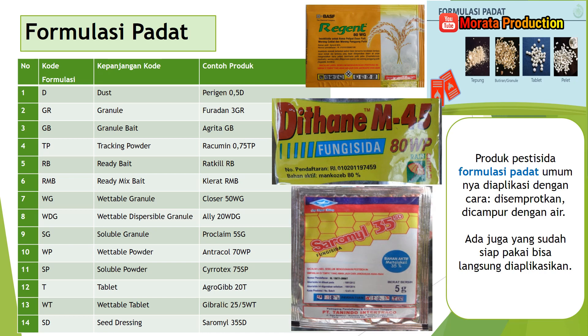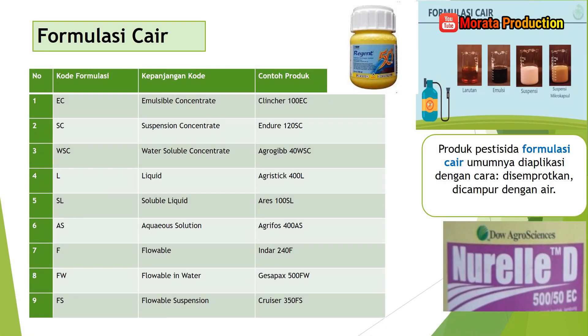WP atau Wettable Powder, contoh produknya Antracol. SP atau Soluble Powder, contoh produknya Kirotex 75SP. T atau Tablet, contoh produknya Agrogeek 20T. WT atau Wettable Tablet, contoh produknya Gribratik 25WG. Produk pesticida formulasi padat umumnya diaplikasikan dengan cara disemprotkan, dicampur dengan air. Ada juga yang sudah siap pakai, bisa langsung diaplikasikan.